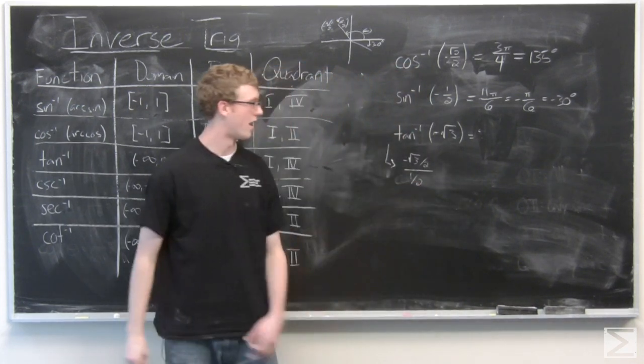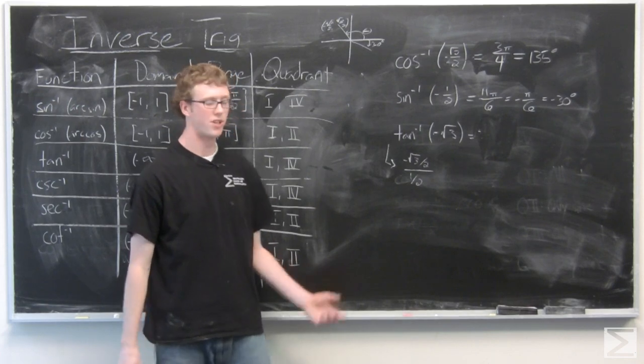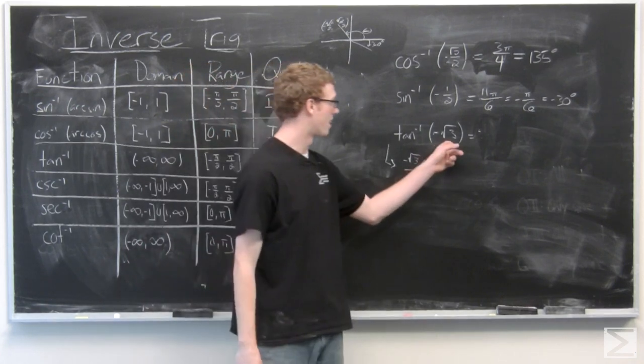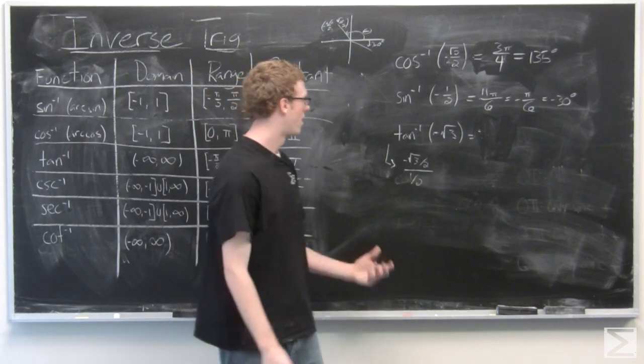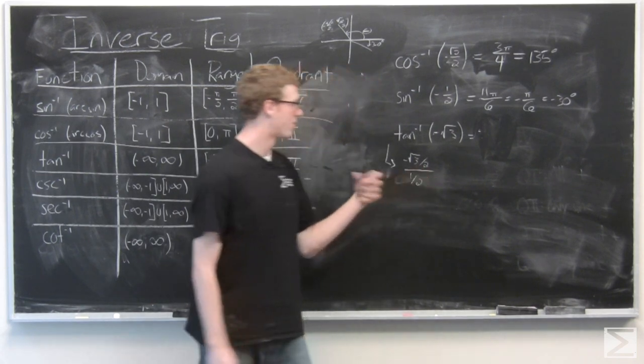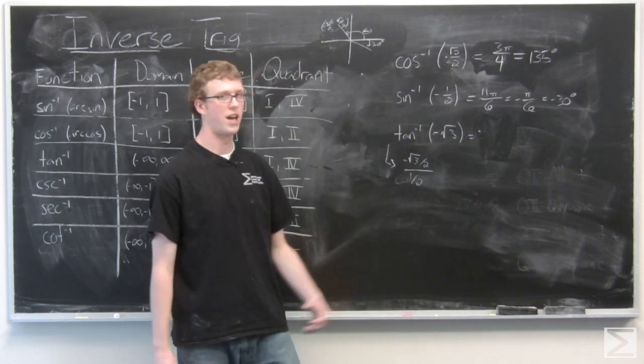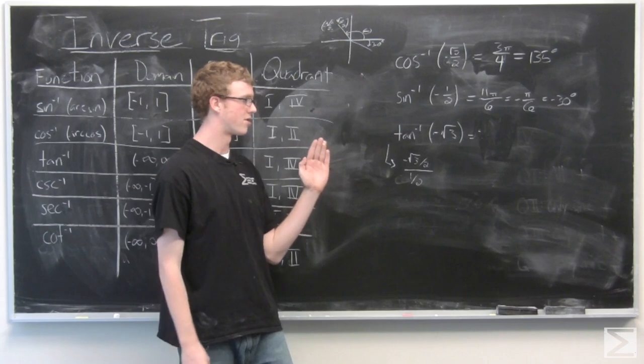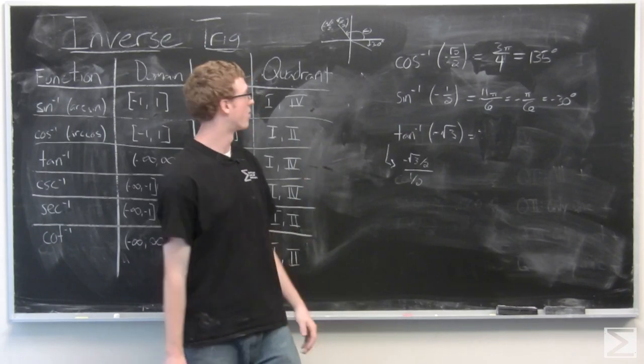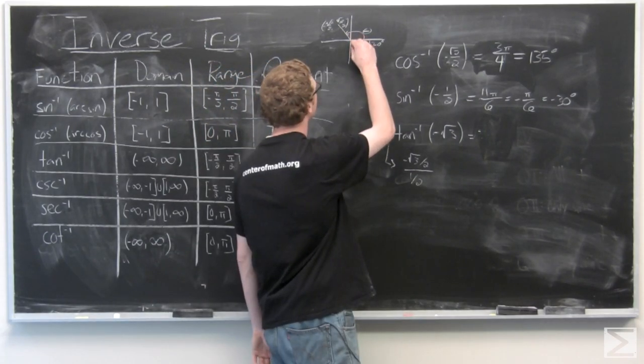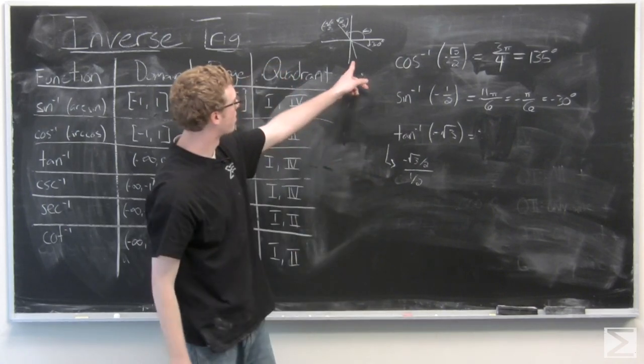Now these are the coordinates that are going to give us negative √3 for tangent, which is negative √3/2, 1/2, which corresponds to the angle that's 30 degrees from the negative y-axis.